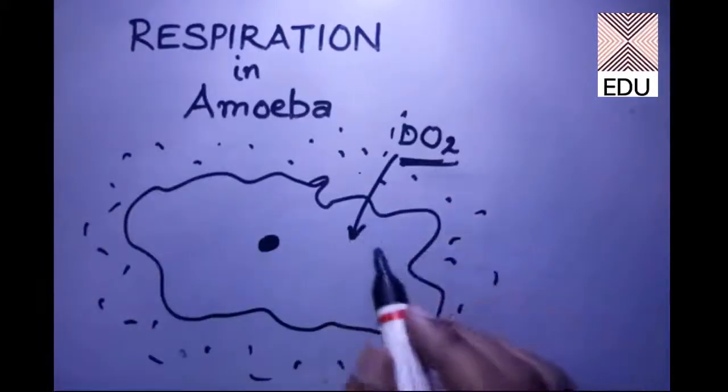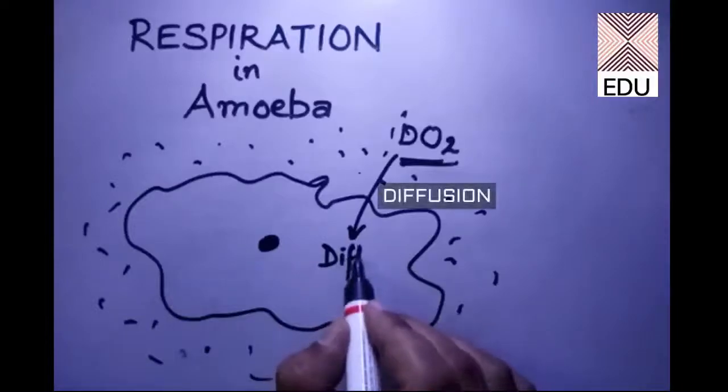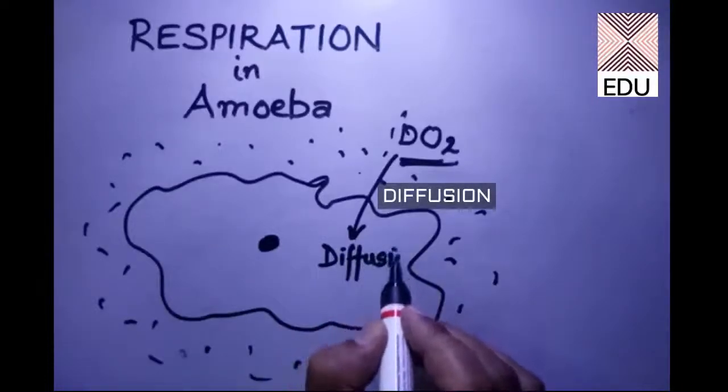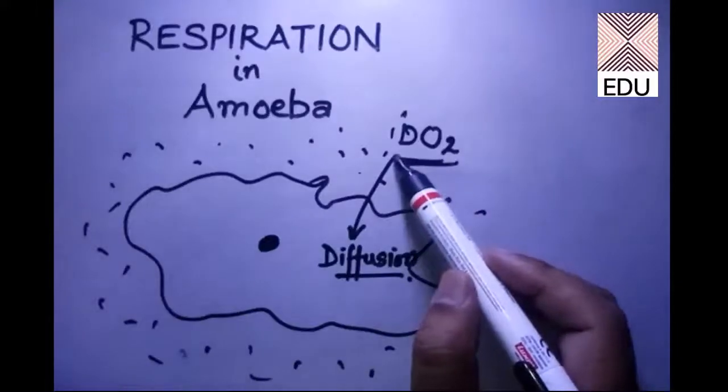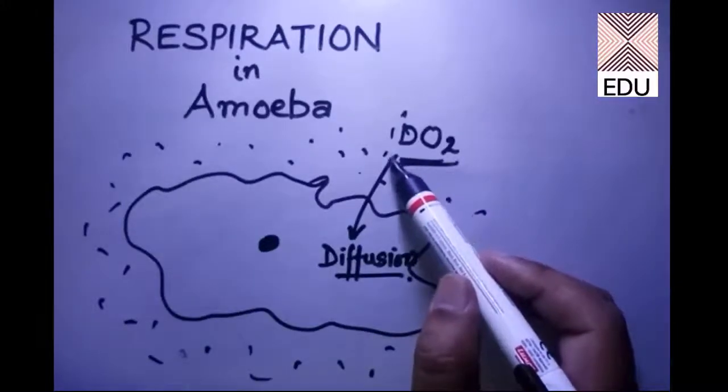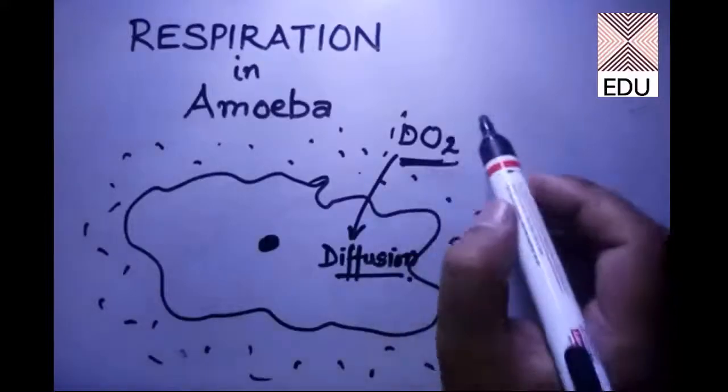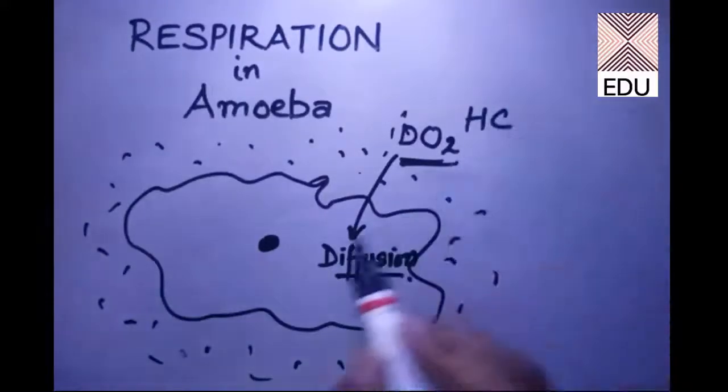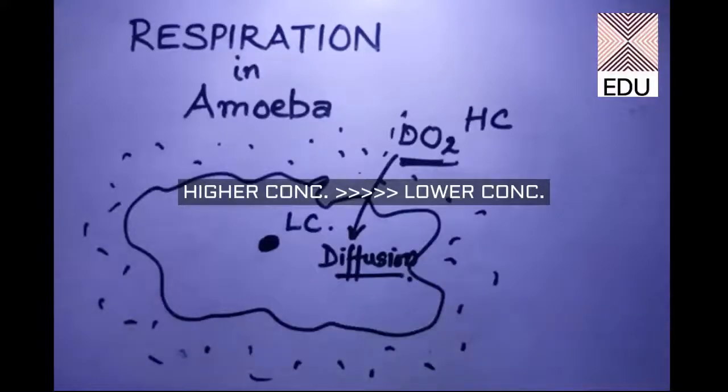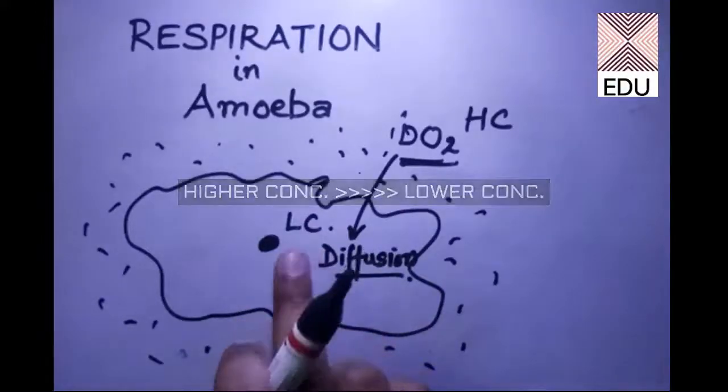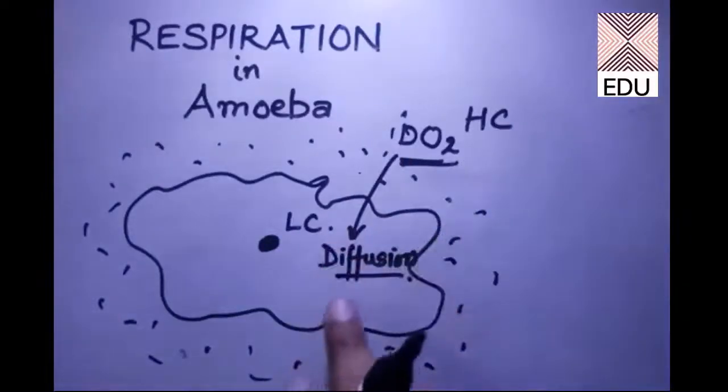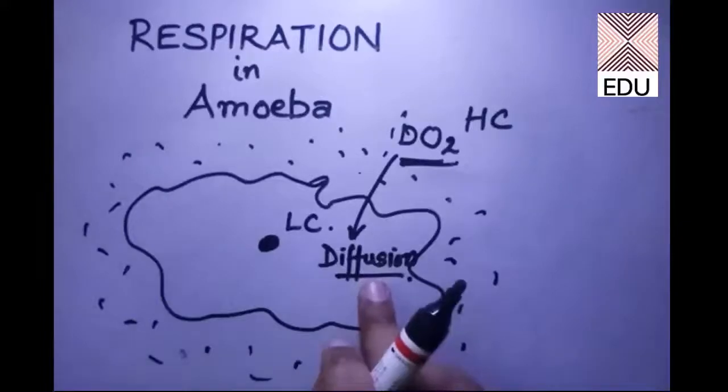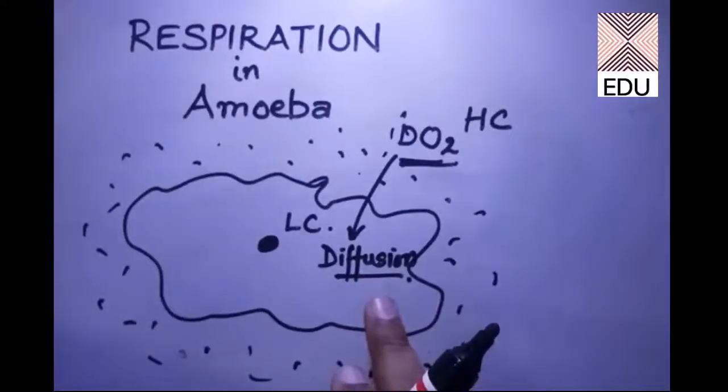This oxygen is taken up by amoeba simply by diffusion. Diffusion is the process of movement of any particle or gas from higher concentration to lower concentration. As oxygen is less in the body of amoeba and higher in the water, it will come inside. This process is called diffusion.